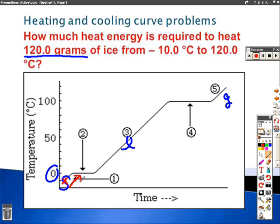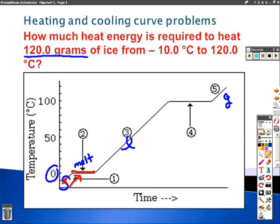Your second step is to go from zero degrees along this flat line — you're not changing temperature here. What's happening right here is the melting part of your graph. This part right here is called heat of fusion, isn't it? So we can abbreviate that as delta H of fusion.